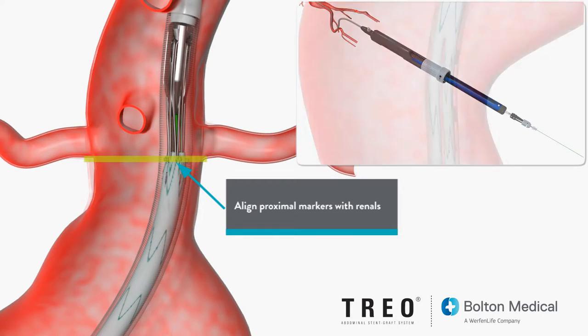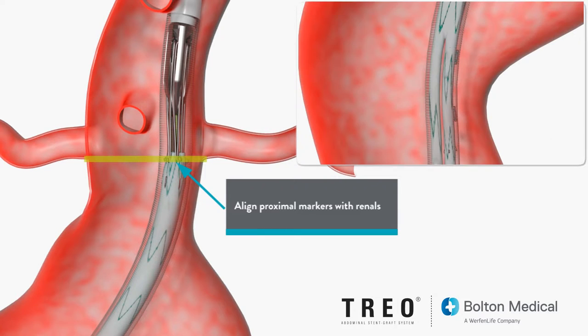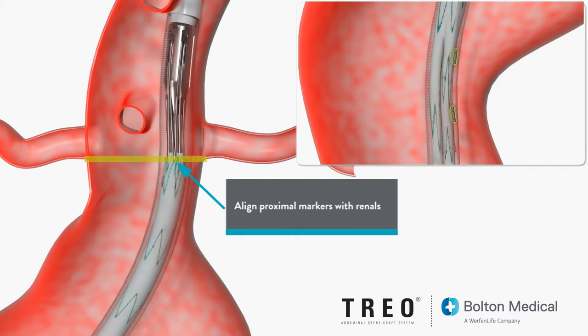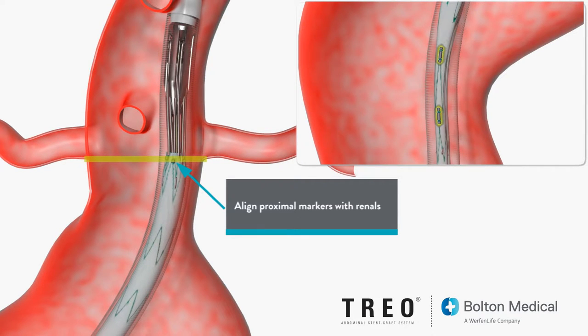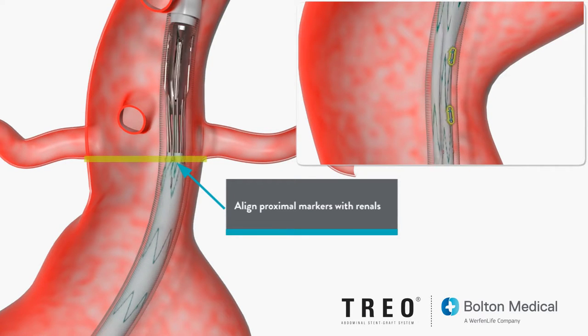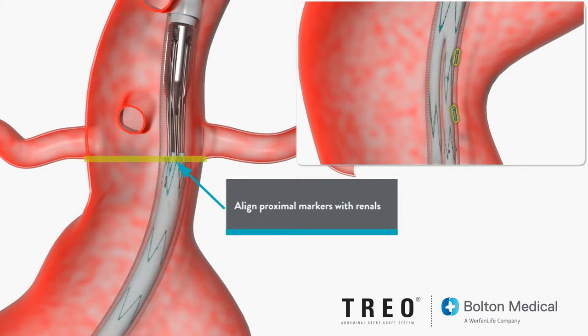Further radial adjustments of the contralateral gate can be made by rotating the entire delivery system. Confirm the radial position by observing the orientation of the radiopaque markers.